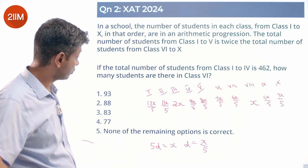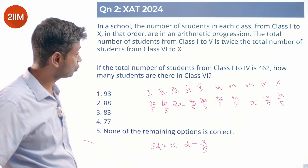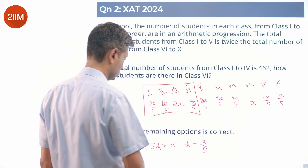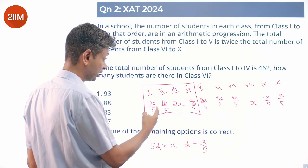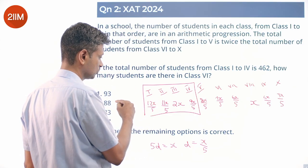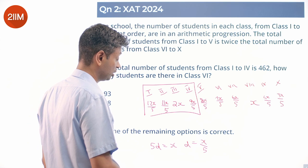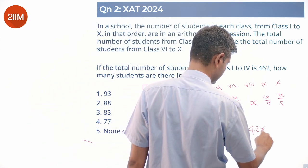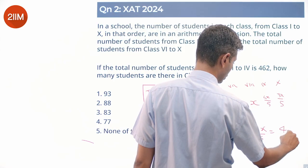The total number of students from class 1 to 4 is 462. Adding these 4 is 462. So, 12x by 5, 11x by 5, 10x by 5, 9x by 5. Twelve plus 9 is 21, 11 plus 10 is 21, so 42x by 5 is 462.